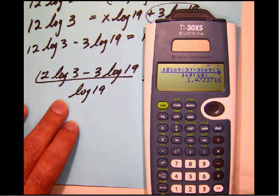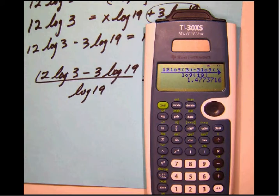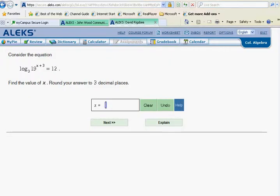Let's calculate. We get an answer 1.477. And now we want to see what ALEKS wants here for rounding three decimal places. So 1.477 should do it. Let's check and see if ALEKS is happy.